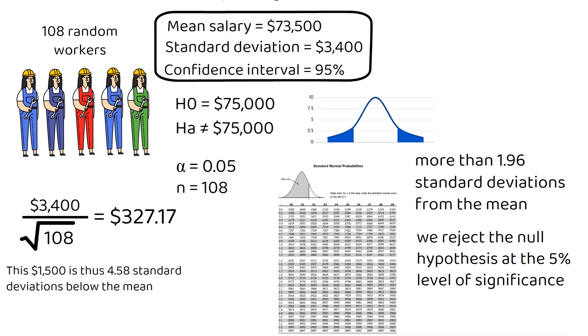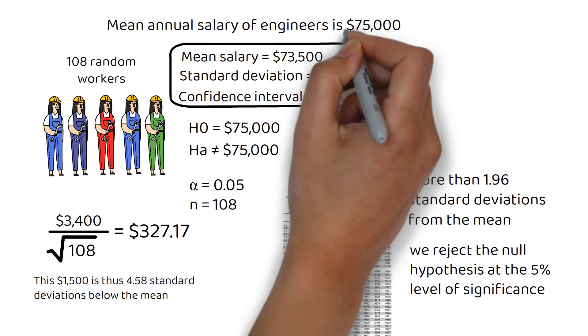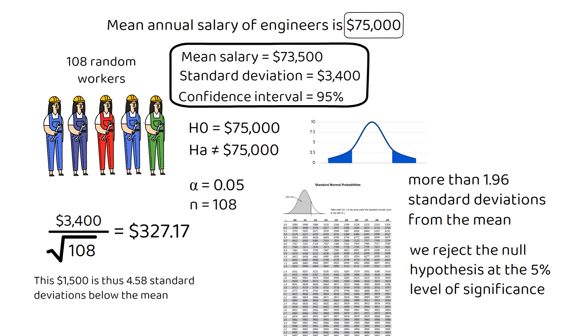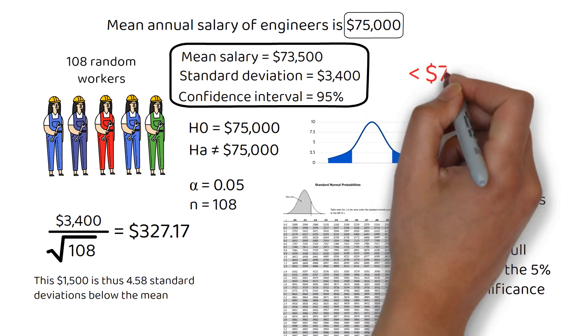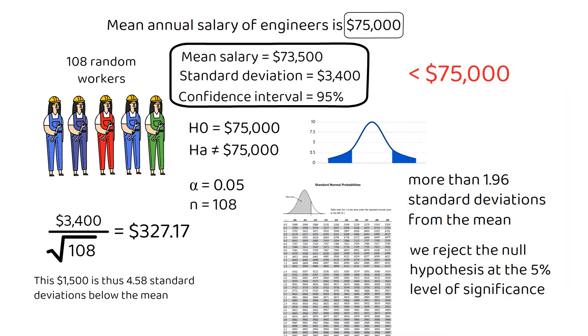There is enough evidence to suggest that the mean annual salary of engineers is not $75,000, as stated by the agency. Simply put, the sample data provides evidence that the mean salary is less than $75,000.